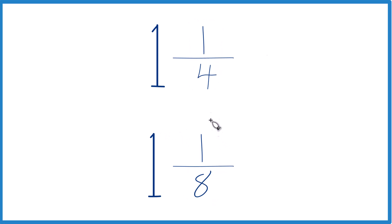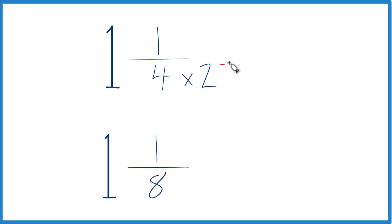Why don't we do this? Why don't we multiply 4 times 2? Because 4 times 2 is 8. Down here, we already have 8, so we're just going to call this 1/8.